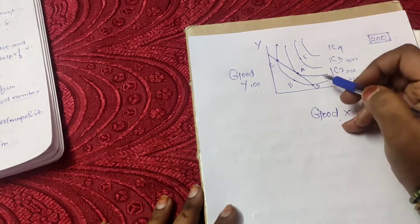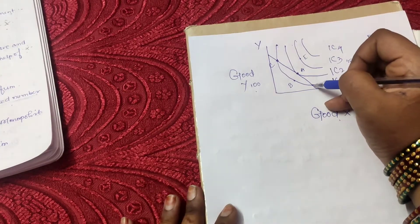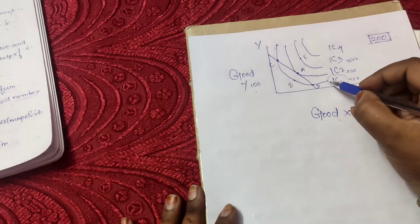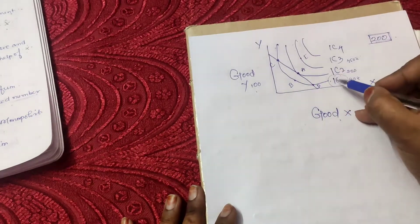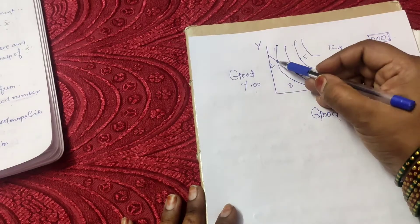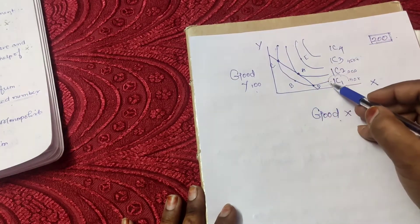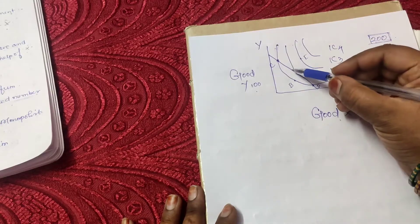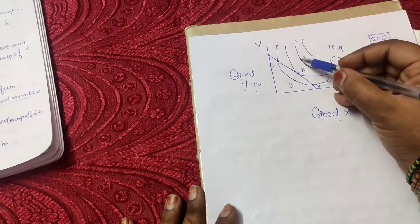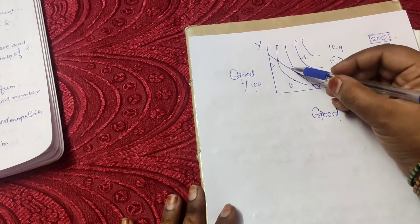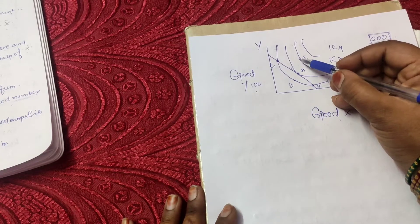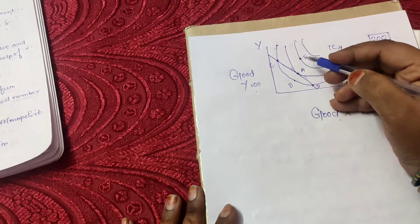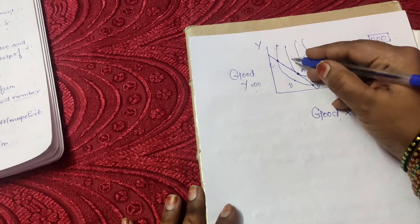Point D is not the optimal choice because it lies on indifference curve 1 — why would the consumer go for lesser satisfaction when he can go for better satisfaction? Point C is also not the optimal choice because it is also lying on the same indifference curve 1. Point E is not the optimal choice because it is out of the budget line — it may give maximum satisfaction but the consumer cannot afford this combination.